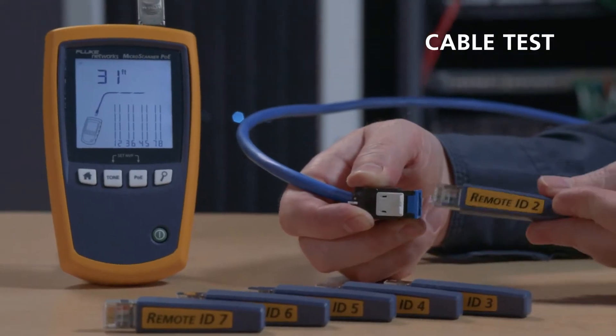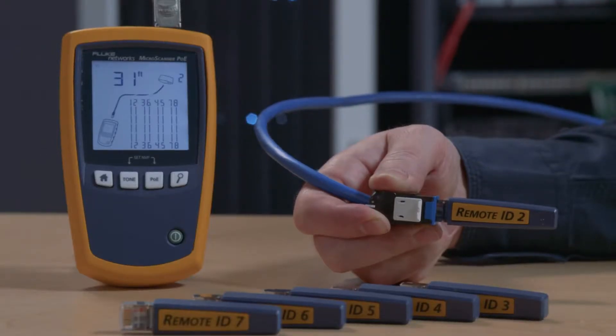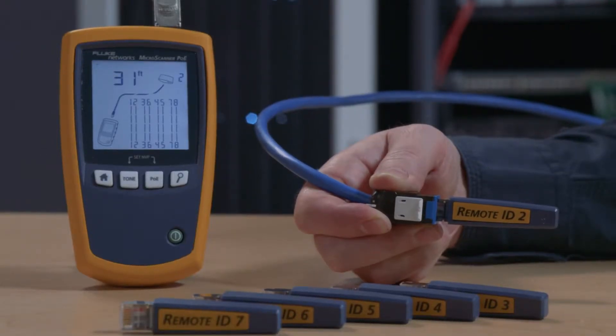With the main WireMap adapter and remote identifiers included in the kit, using multiple remote identifiers makes it easy to identify connections at patch panels.